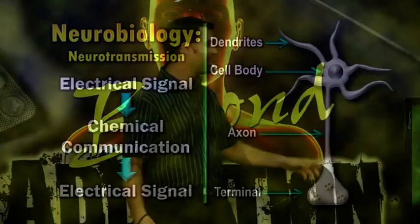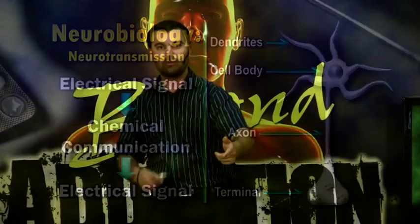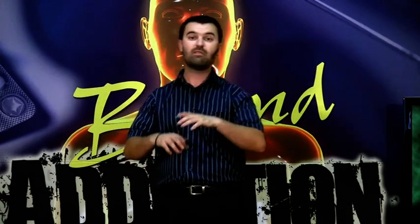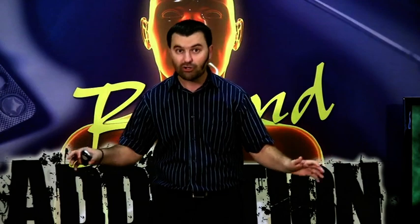The neurotransmitter floats across the synapse and connects to the dendrites on the receiving postsynaptic neuron. Those chemicals are received by the dendrites of the postsynaptic neuron and changed back into electrical signal. Electrical becomes chemical, becomes electrical, becomes chemical — hundreds of thousands of times every waking and sleeping moment of your life, with hundreds of different types of neurotransmitters doing all sorts of different things. And that's what it means to be human.